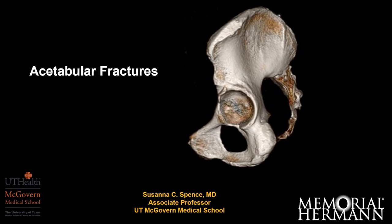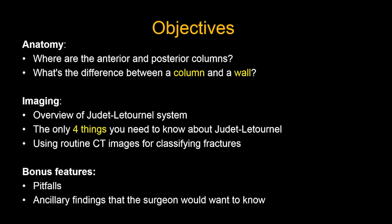Today we're going to talk about acetabular fractures. It's an area of ER imaging that seems at first sight to be more complicated than it actually is, so let's see if we can break it down into a few simple concepts. Our objectives: we'll discuss where the anterior and posterior columns are, the difference between a column and a wall, a general overview of the Judet-Letournel classification system, the only four things you need to know about it, and how to use routine CT images to classify these fractures.